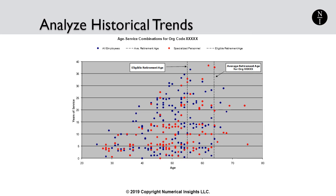Depending on the type of workforce planning study you are doing, you may end up studying retirement patterns, especially if you are in a country impacted by the baby boomer wave. While people are eligible to retire at 55 in this particular company, the average retirement age is actually in the 60s. We can also look at trends over time to see if the retirement age in various regions of the globe or specific job roles is getting higher or lower.